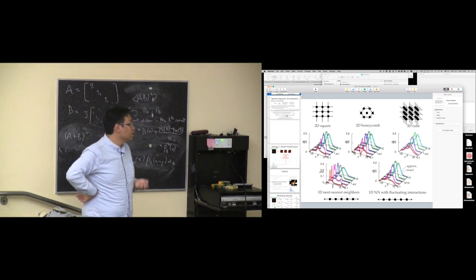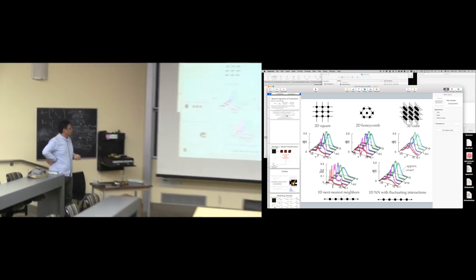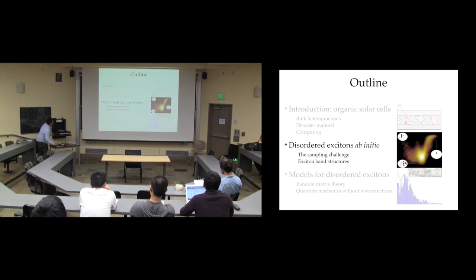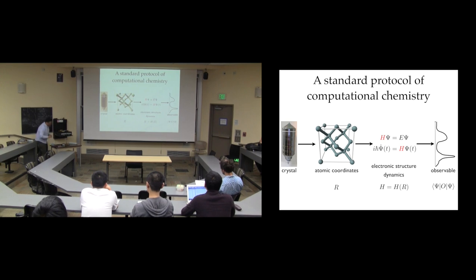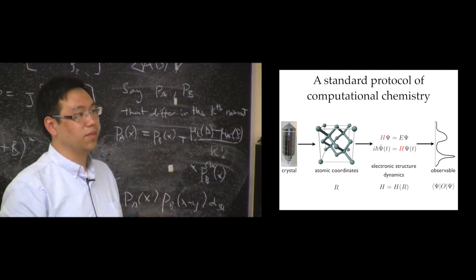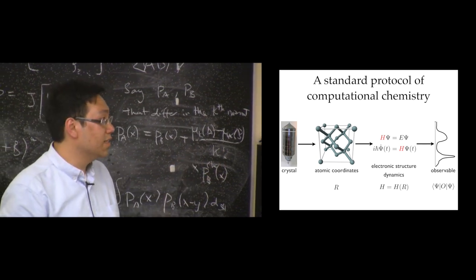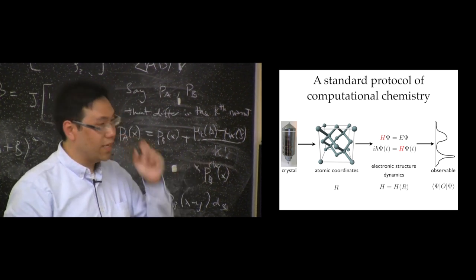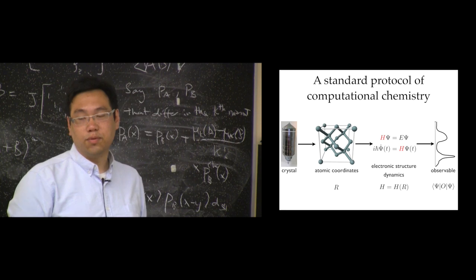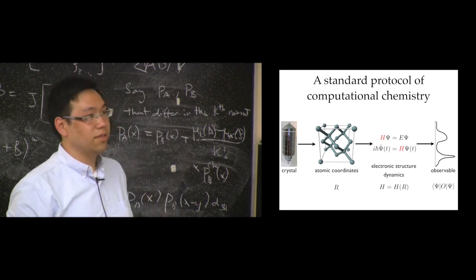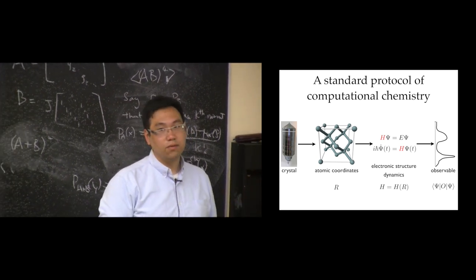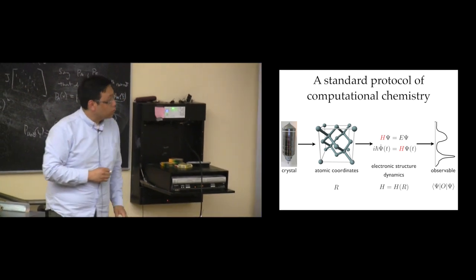I was going to say a few words about excited states. As a computational chemist, the standard protocol is: get some structure for the molecule or material, expressed as atomic coordinates; write down Schrödinger's equation; solve it. At the very end, take the eigenvalues and eigenfunctions you get and compute something like the dipole moment, which gives absorption efficiencies. The general framework is: solve the Schrödinger equation, which in a finite basis is an eigenvalue problem, and then use that to compute the observable you're interested in.